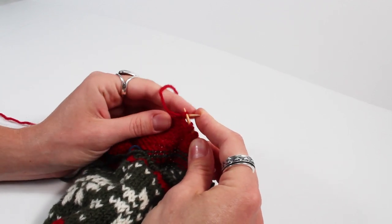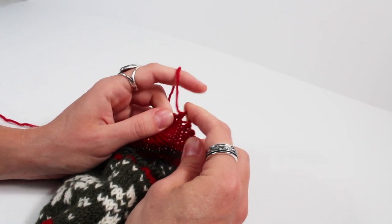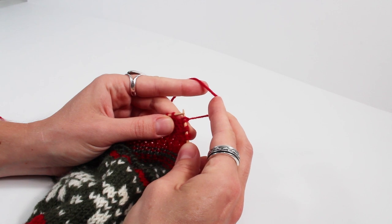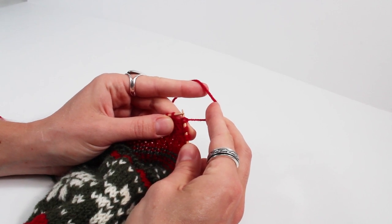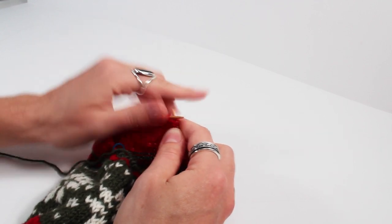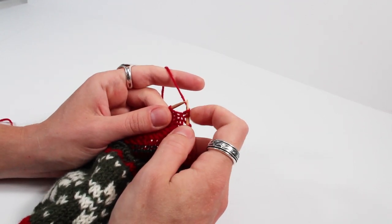Slip the stitch as if to purl and pull up on the working yarn. This will create the double stitch. After you pull up on the working yarn, move the yarn back in front to purl back across your row.